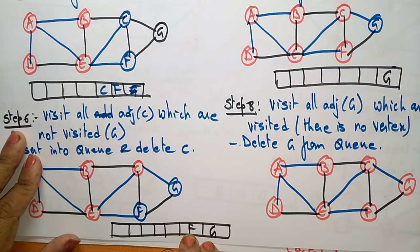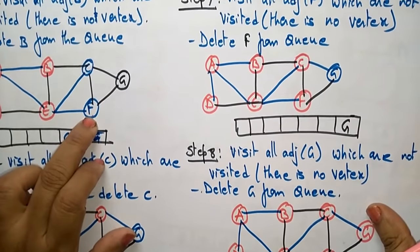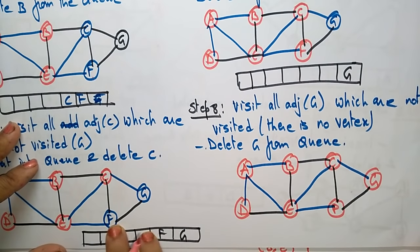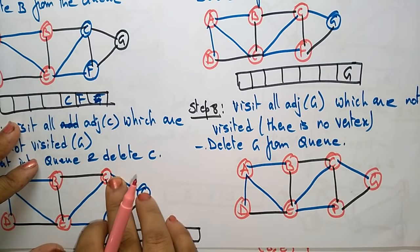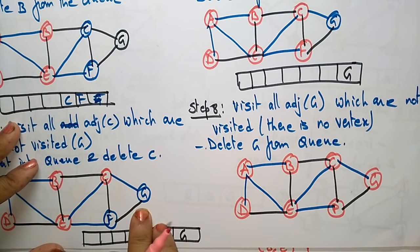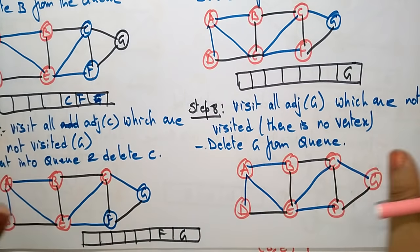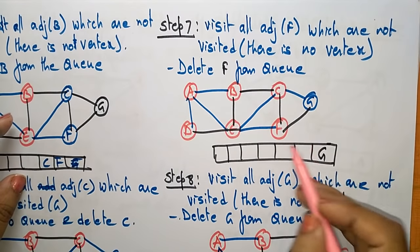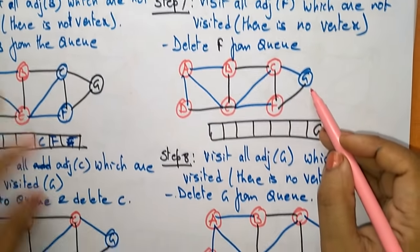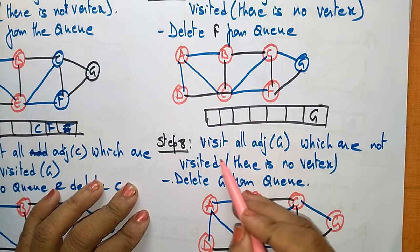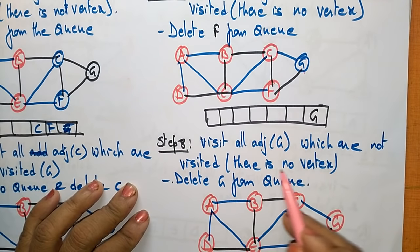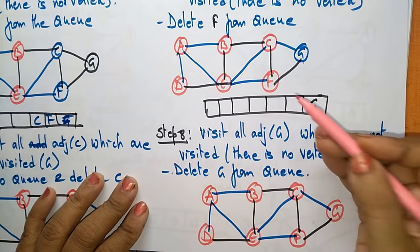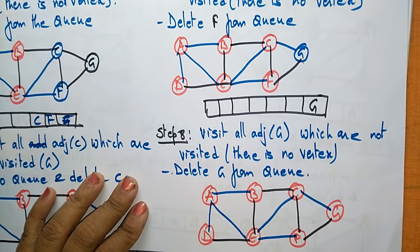Now check F. From F, all vertices are already visited: E, C, and G are visited, and E and C are also deleted from the queue. There are no new vertices to visit from F, so delete F from the queue. Next check G — visit all adjacent vertices of G which are not visited. There are no unvisited vertices from G, so delete G as well.